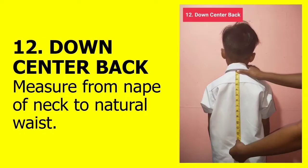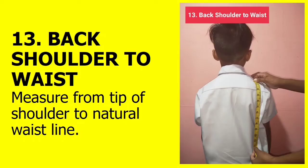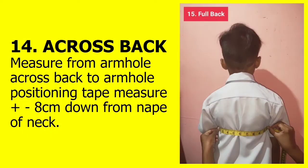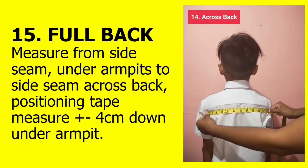Twelve, down center back: measure from nape of neck to natural waist. Thirteen, back shoulder to waist: measure from tip of shoulder to natural waistline. Fourteen, across back: measure from armhole across back to armhole, positioning the tape measure 8 cm down from the nape of neck. Fifteen, full back: measure from side seam under armpits to side seam across back, positioning tape measure 4 cm down under the armpit.